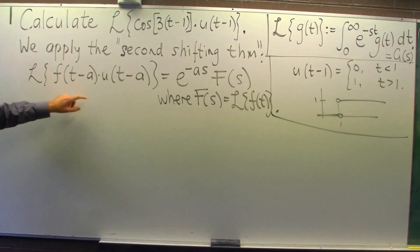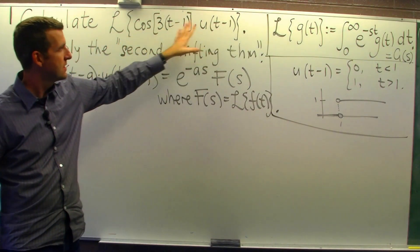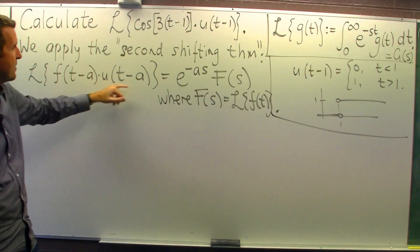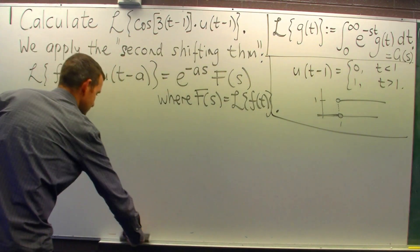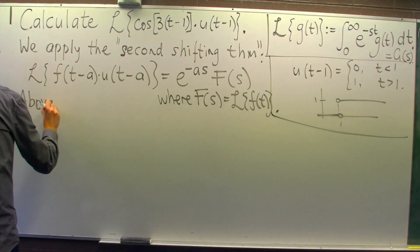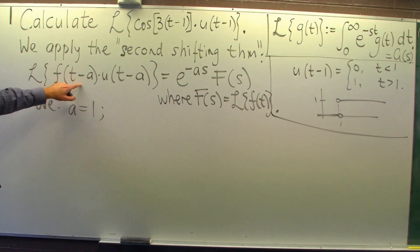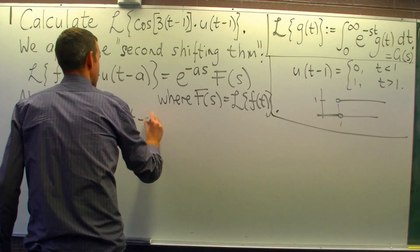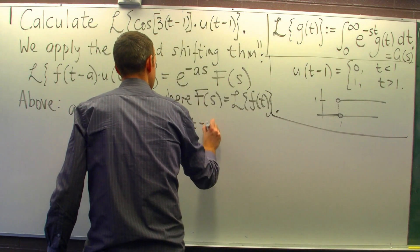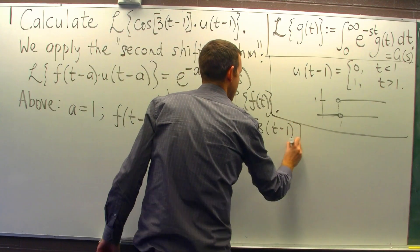So here we have f of t minus a, and here we have f of t. So the first thing we do is compare with our original problem, find out what a is and what f of t minus a is. Alright, so a is going to be one, and f of t minus a is going to be cos of three t minus one.